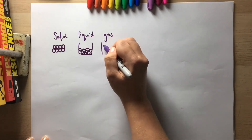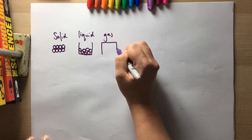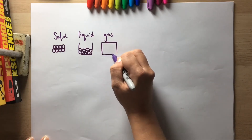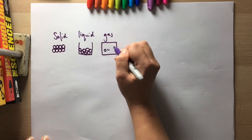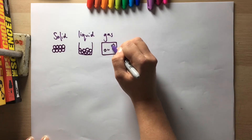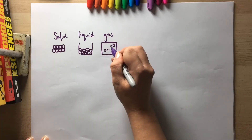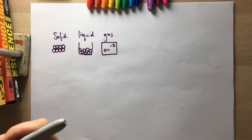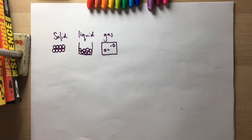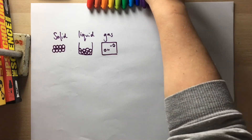And if it's a gas, we have only a couple of particles, and often you have little lines to represent that they are moving.